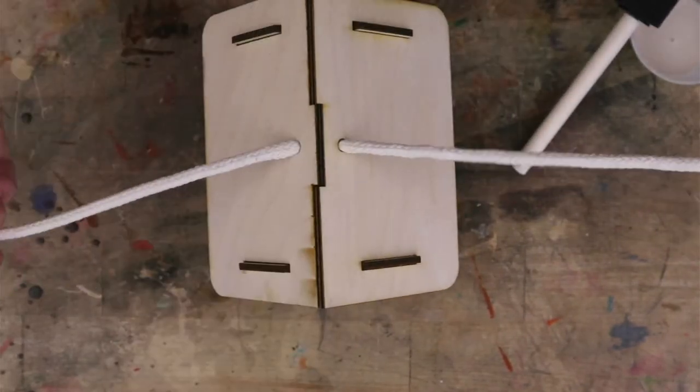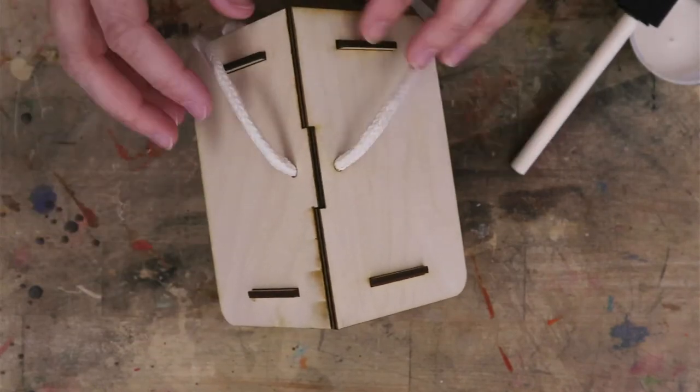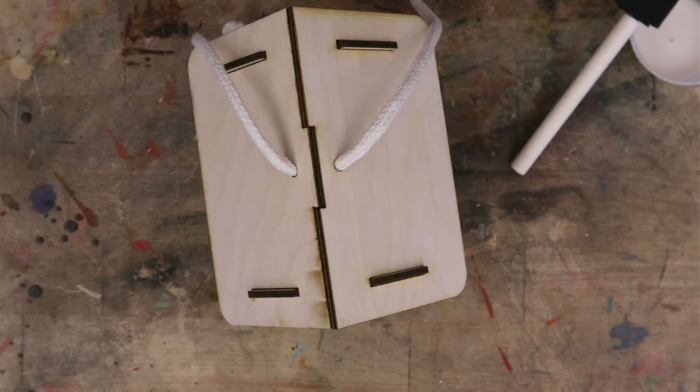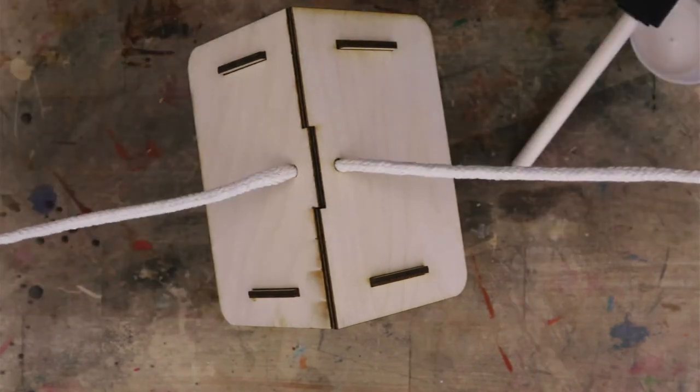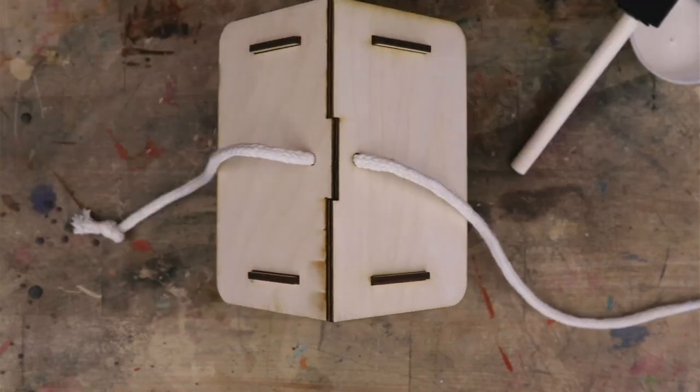So again, if you would like to have a loop on top to hang it from, you can tie a knot on the inside of each side of the roof or just thread it through and leave the ends hanging off so you can tie it around whatever. It will be much harder to add the string after you've glued it all together.